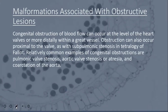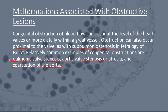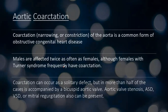These are malformations associated with obstructive lesions. Congenital obstruction of blood flow can occur at the level of the heart or within the great vessels, such as the aorta. Obstruction can also occur proximal to the valve, such as subpulmonic stenosis. Common examples of congenital obstructions are pulmonic valve stenosis, aortic valve stenosis or atresia, and coarctation of the aorta — which will be our discussion for today.